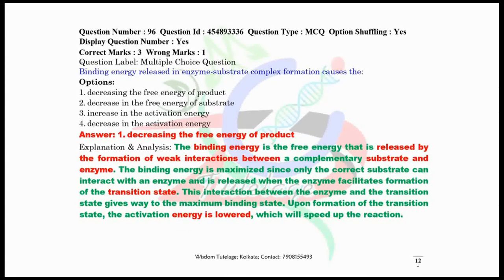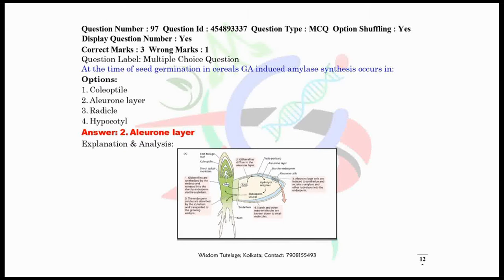Question number 96, binding energy released in enzyme-substrate complex formation possesses the decreasing of free energy product. You have to remember the entire explanation. Now question number 97, at the time of seed germination in cereals, gibberellic acid or GA-induced amylase synthesis occurs in the aleurone layer. I have given here a clear pictorial guide for your future reference.